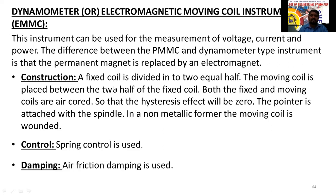For the construction: a fixed coil is divided into two equal halves, and there is one moving coil. The fixed coil is split into two parts placed at a distance, and between these two halves of the fixed coil we place one moving coil. Both the fixed and moving coils are air-cored — no iron material is used as core, just air — so the hysteresis effect will be zero.